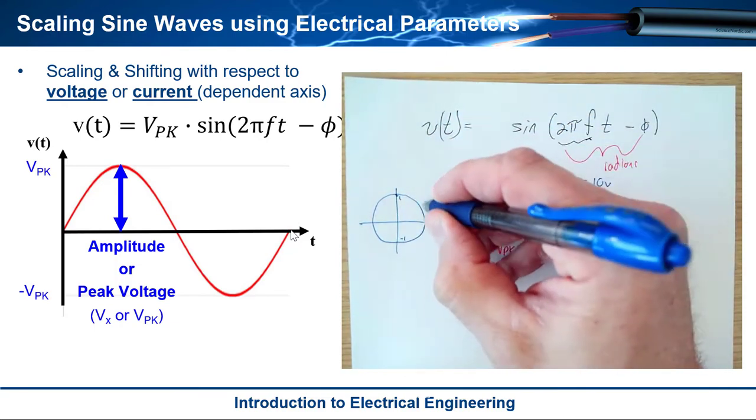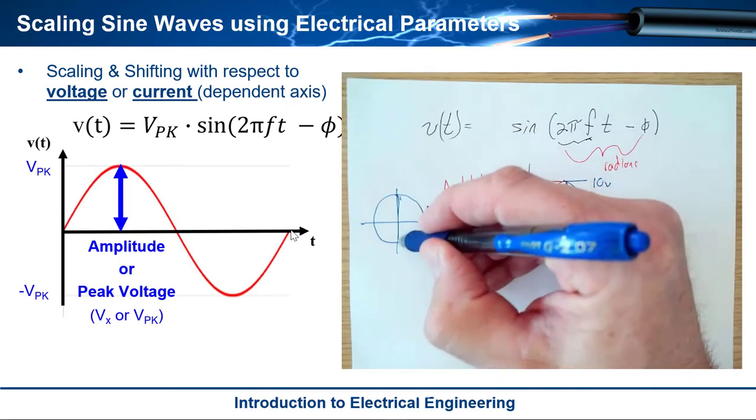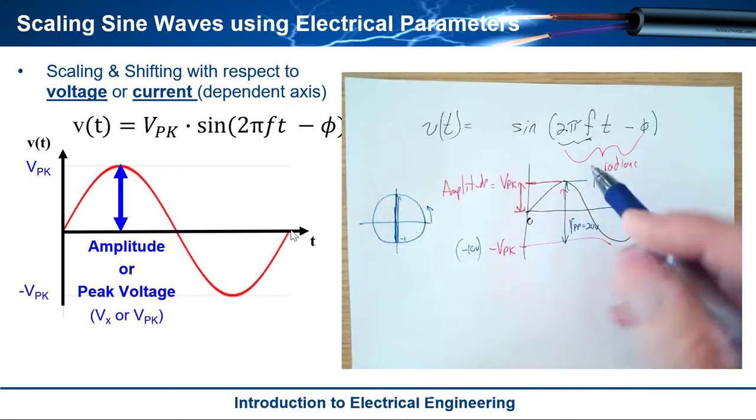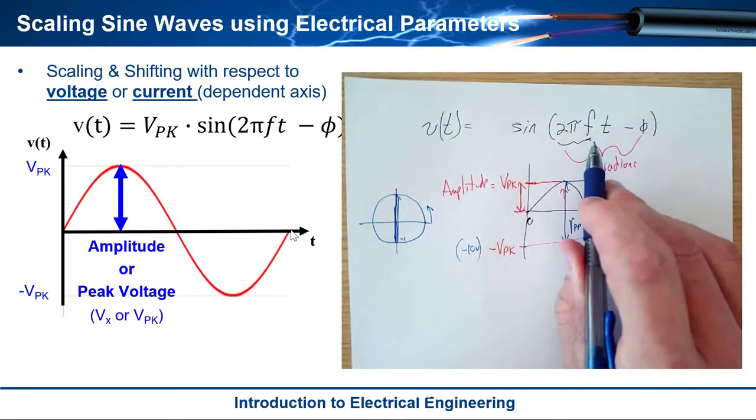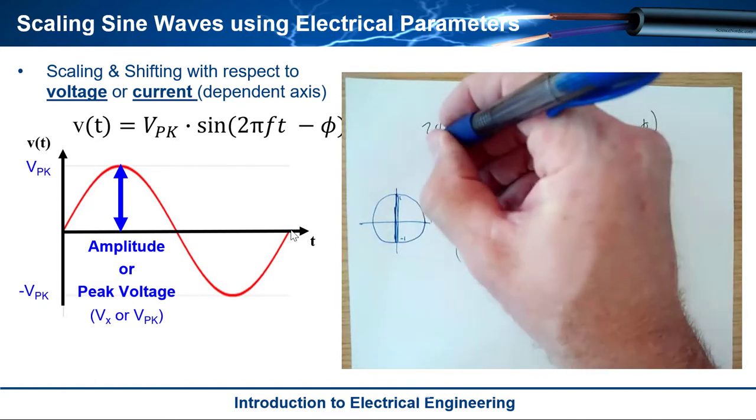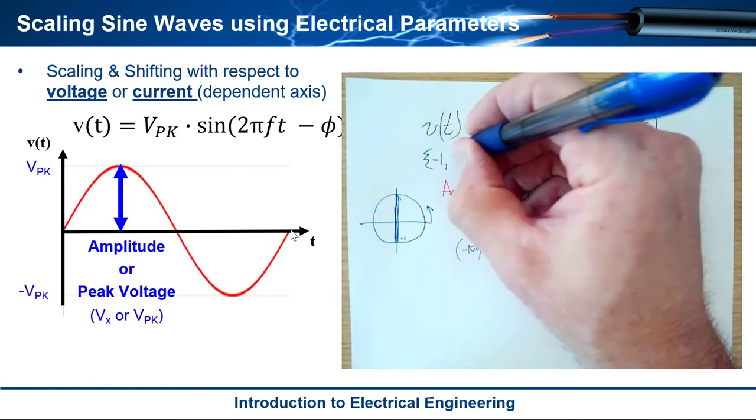And as the angle radians go around the sine wave basically goes up and down up and down. So this as it's written right here produces a range on v(t) that goes from negative one to one.